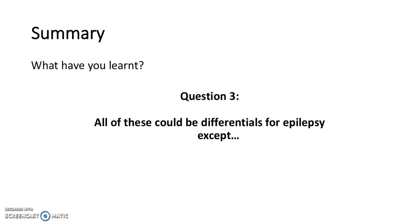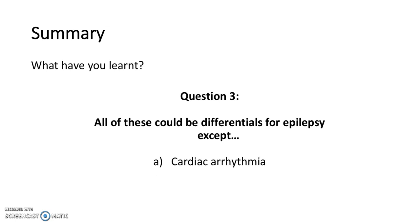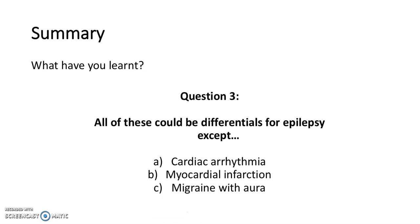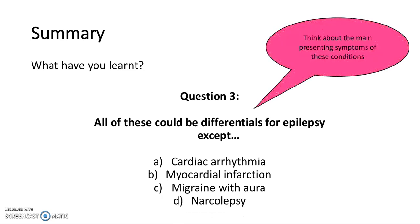Question 3: all of these could be differentials for epilepsy except what? Is that a cardiac arrhythmia, a myocardial infarction, a migraine with aura, or narcolepsy? Think about the main presenting symptoms of all these conditions. The answer is a myocardial infarction, because that would present with chest pain rather than any kind of seizure or collapse. Thank you for watching.